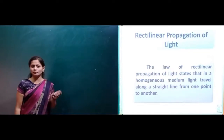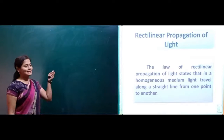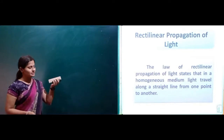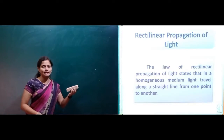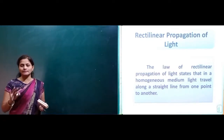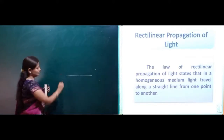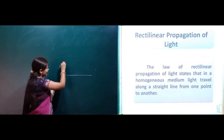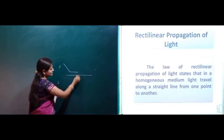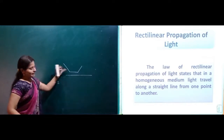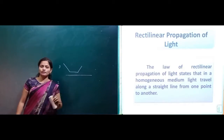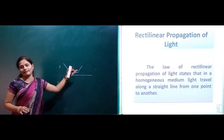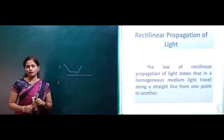Next, rectilinear propagation of light. The law of rectilinear propagation of light states that in a homogeneous medium, light travels along a straight line from one point to another point. Homogeneous means the same medium throughout. This is known as rectilinear propagation of light.